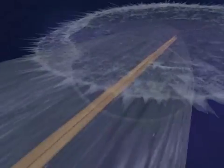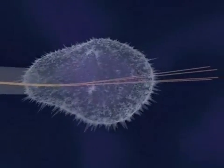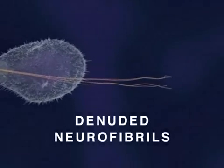Ultimately, both the developing neurite and its growth cone collapse, and some denuded neurofibrils form aggregates, or tangles, as depicted here.